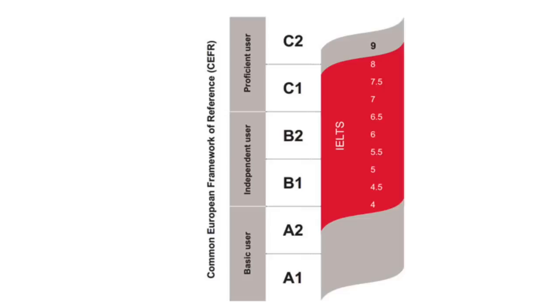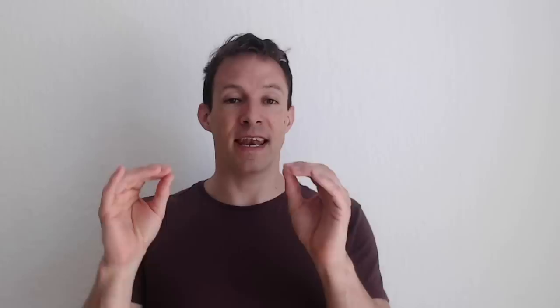IELTS band scores correspond to the Common European Framework of Reference, which is basically the European Union's version of band scores — except they go from A1, A2, B1, B2, C1, C2 rather than bands 1 through 9. A C2 correlates directly to a band 9 — not directly, but there is a strong correlation.